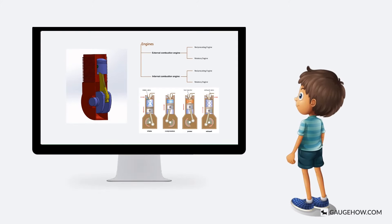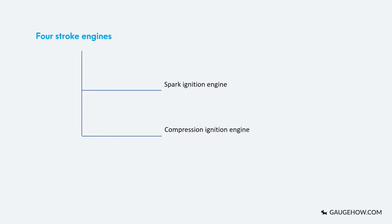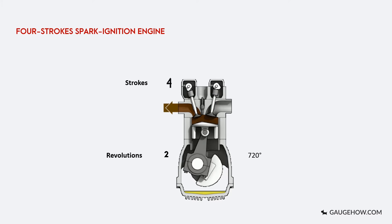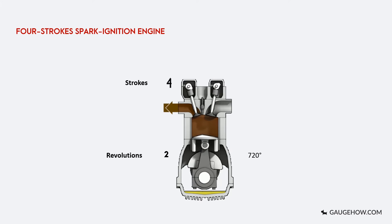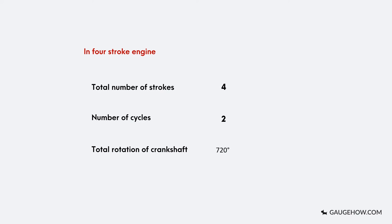In four-stroke engines, there are two types: spark ignition and compression ignition engines. The working principle of the two is similar but with some fundamental differences. We will discuss each one by one. The first is the four-stroke spark ignition engine. In this engine, the cycle is completed in four strokes of the piston. When the piston completes four strokes, the crankshaft makes two revolutions. Each stroke consists of 180 degrees of crankshaft rotation, thus it requires 720 degrees of crankshaft rotation to complete the cycle.